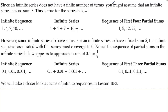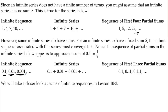Since an infinite series does not have a finite number of terms, you might assume it has no sum. This is true for some series — for example, one whose partial sums 1, 5, 12, 22 shoot off to infinity. However, some infinite series do have sums. For an infinite series to have a fixed sum S, the associated sequence must converge to 0. The sequence of partial sums then appears to approach a limit, such as 0.1 repeating, or 1 ninth. We will take a closer look at sums of infinite sequences in Lesson 10.3.